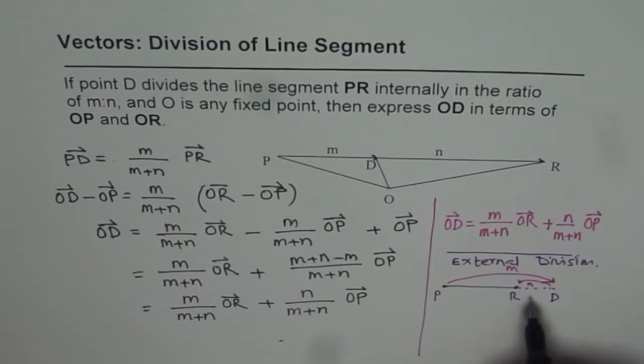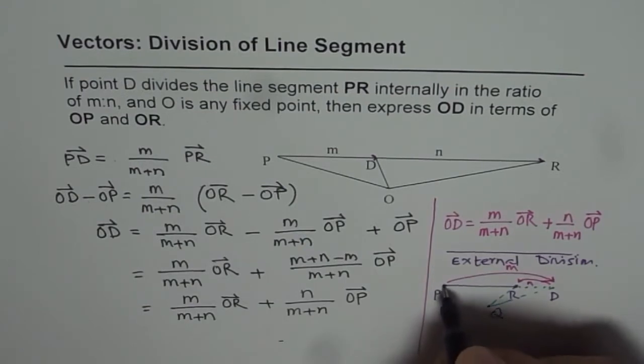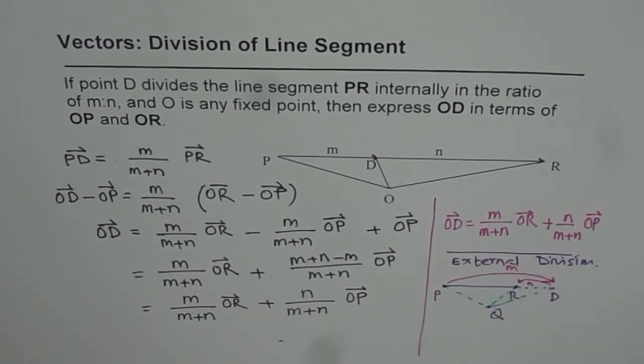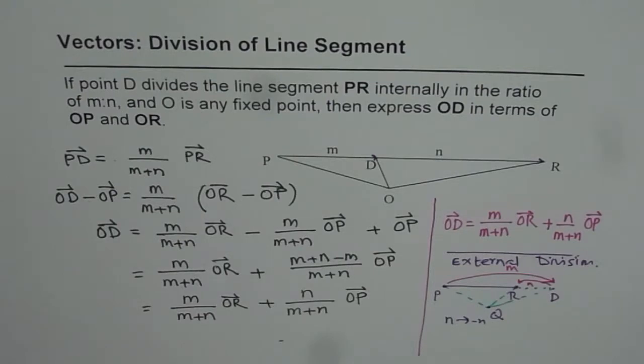Now the only difference will be that you can use the same formula with an external point O. So we get a similar diagram as we worked with just now. We will get exactly the same formula. The only difference will be that now this N will be replaced with minus N because the vector is in the opposite direction.